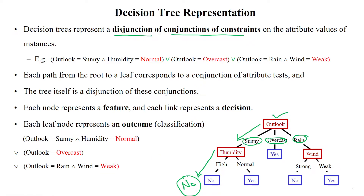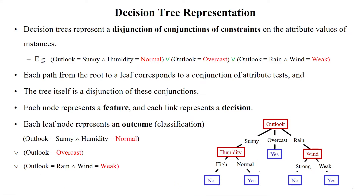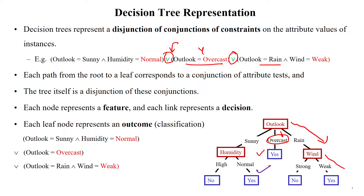Another path: if outlook equals sunny AND humidity equals normal, we can play tennis. So the rule is: outlook = sunny AND humidity = normal → play tennis = yes. Another branch: if outlook equals overcast, we can also play tennis regardless of other conditions.